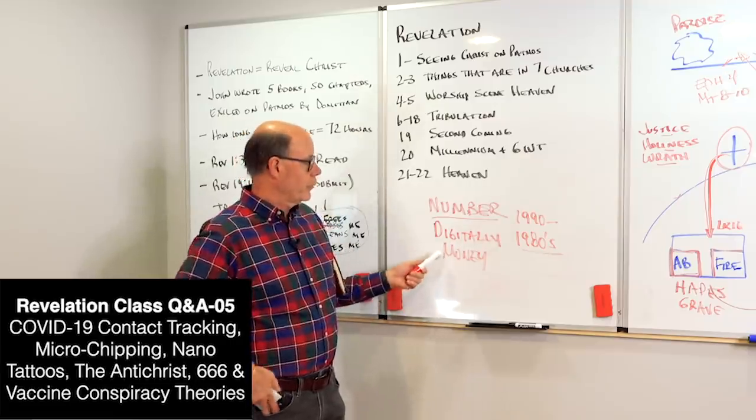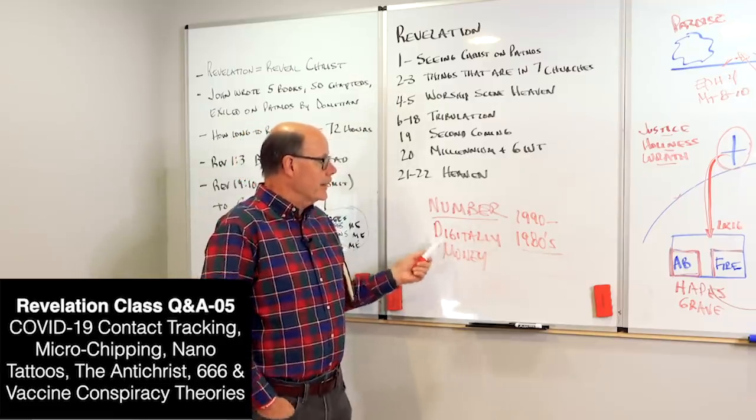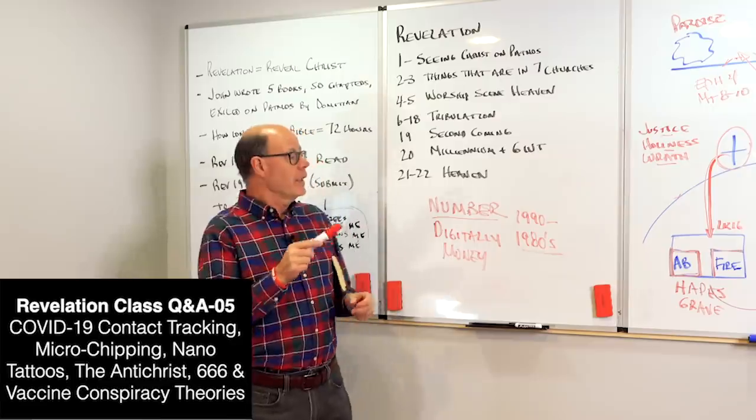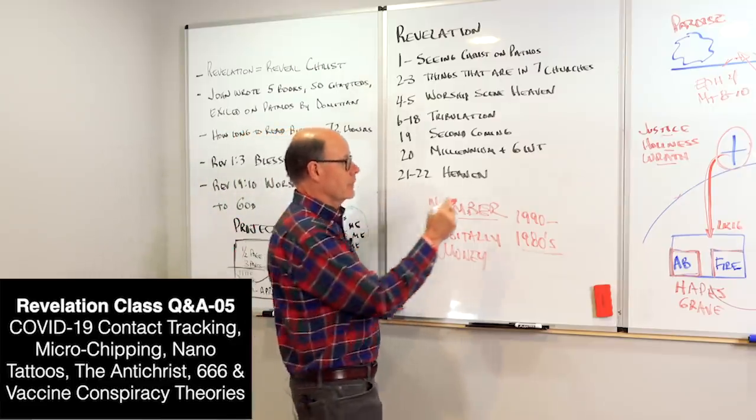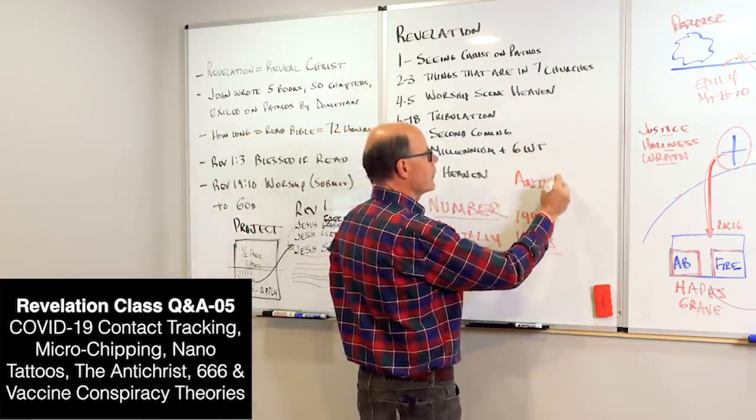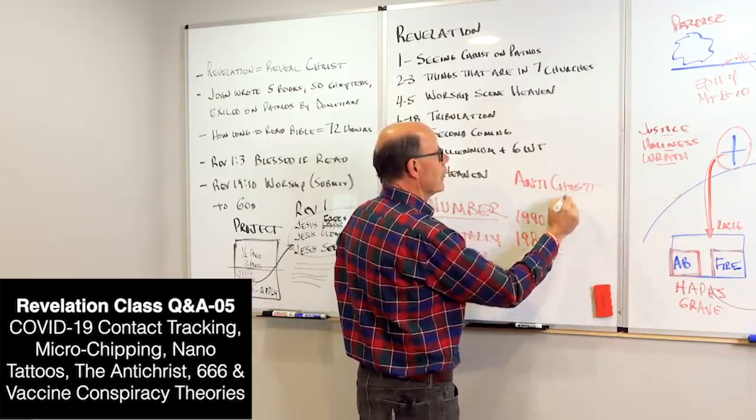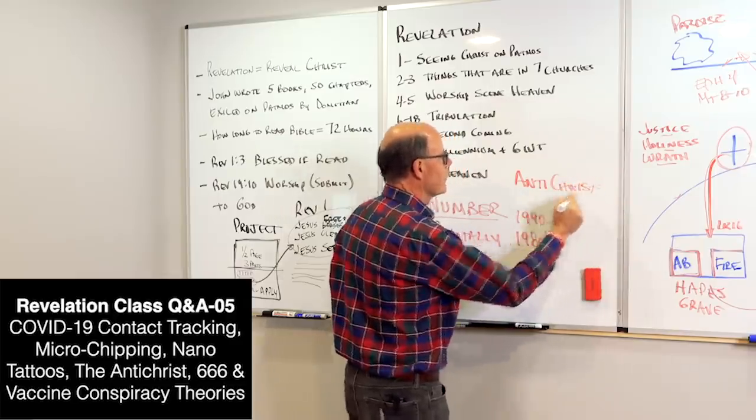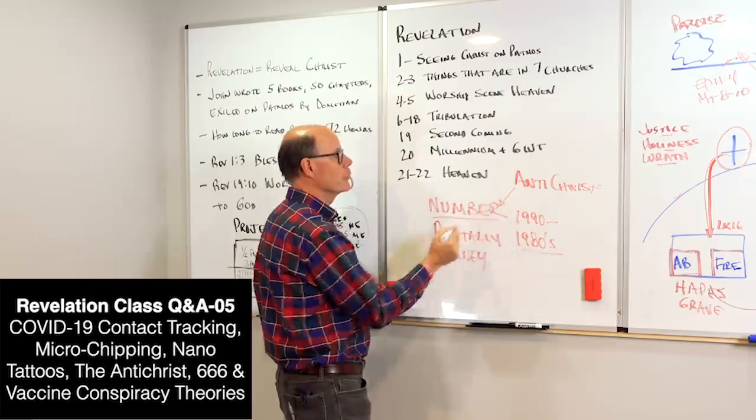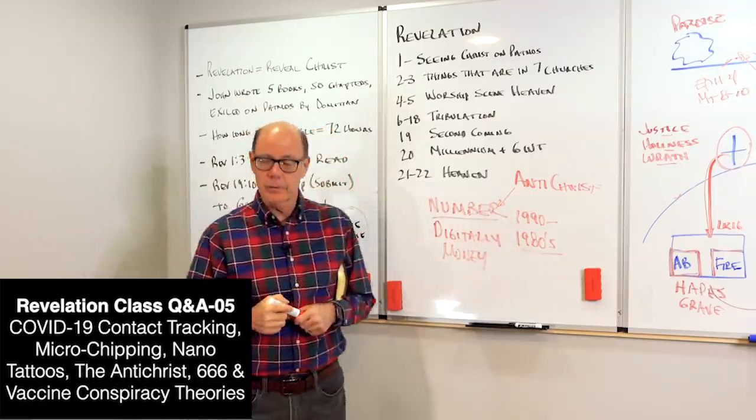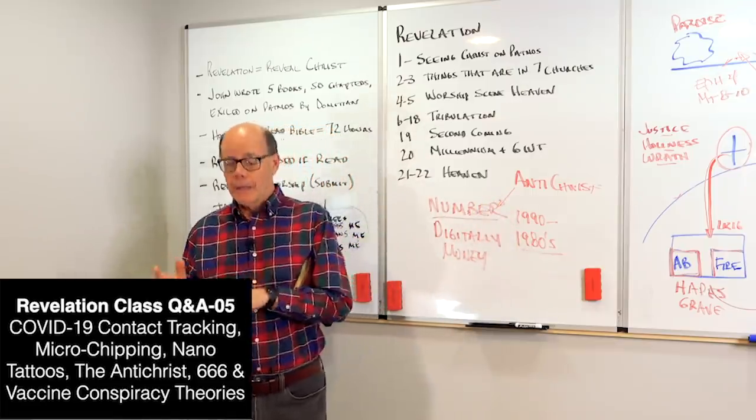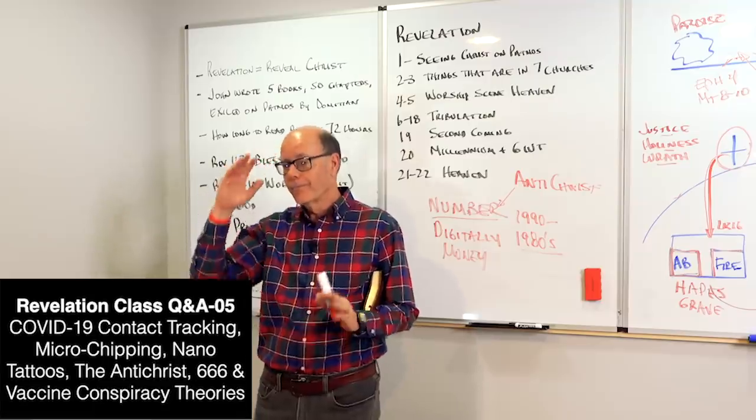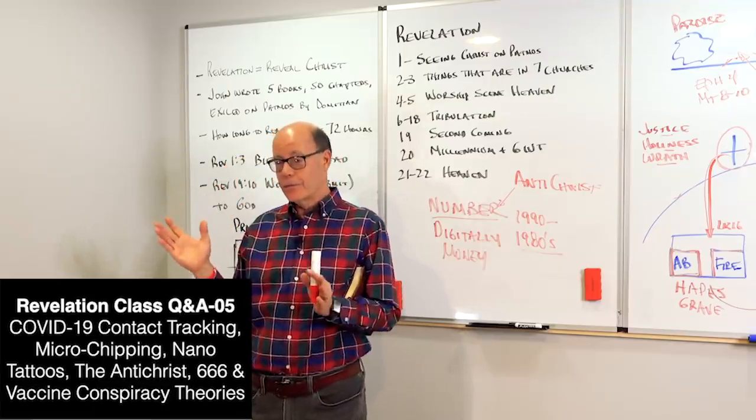We have no problem with buying and selling with numbers. The real lesson is that the Antichrist assumes control over global commerce. And people have their right hand or their forehead. Several things this could be.